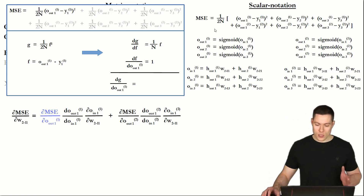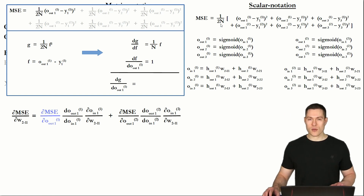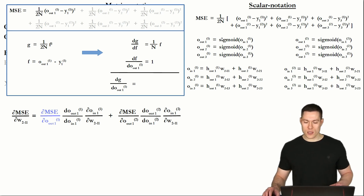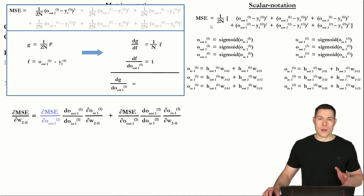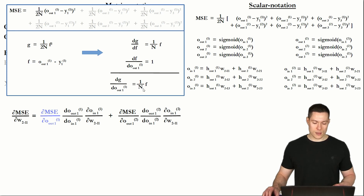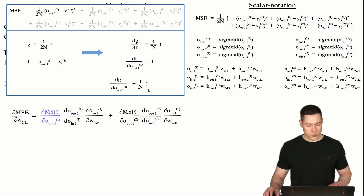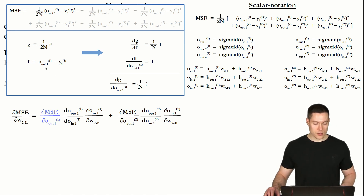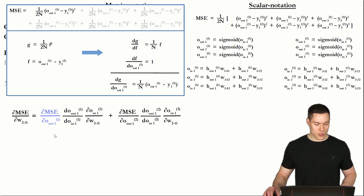We can do that because this doesn't really change anything about the behavior of the mean squared error — the magnitude is just scaled down somewhat. So that's what we are going to do from now on. To determine the final derivative here, we multiply the two functions together, giving simply 1 over n times f. And since f equals O_out 1 minus y1, we can replace that. This is now our derivative.